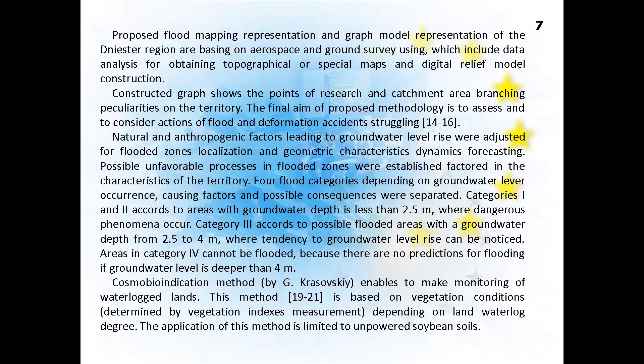The final aim of the methodology is to assess and address flood and deformation accident mitigation. Natural and anthropogenic factors leading to groundwater level rise were analyzed for flooding zones localization and dynamic forecasting. Flood categories were defined depending on groundwater level occurrence. Categories 1 and 2 correspond to areas where groundwater depth is less than 2.5 meters, representing a dangerous phenomenon. Category 3 covers areas with groundwater depth from 2.5 to 4 meters where a tendency to groundwater level rise is noticed. Category 4 areas cannot be flooded, as groundwater level is deeper than 4 meters.